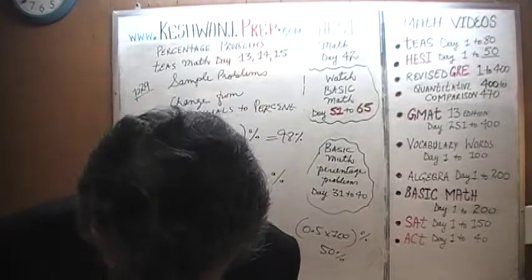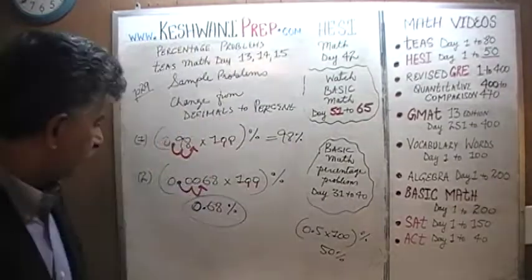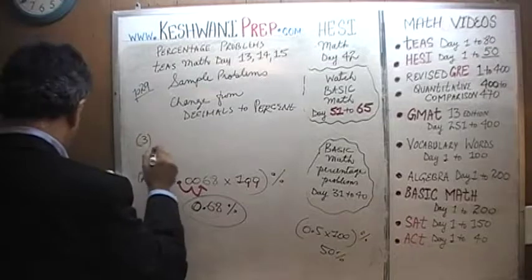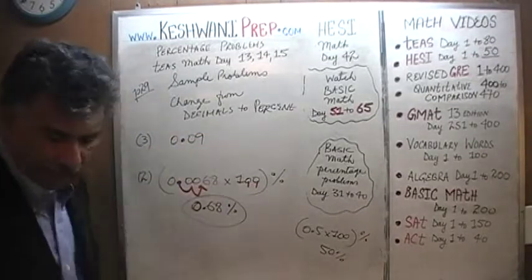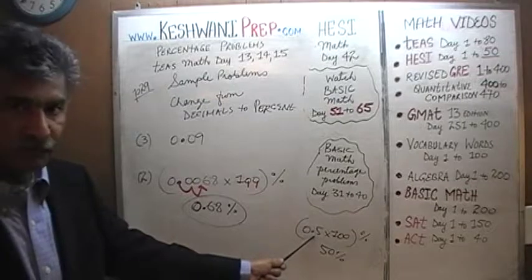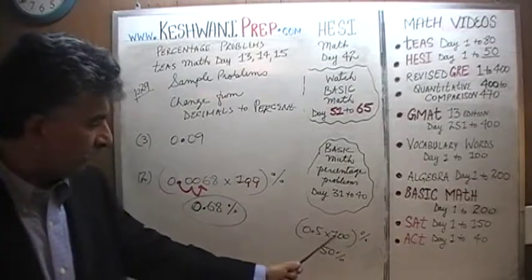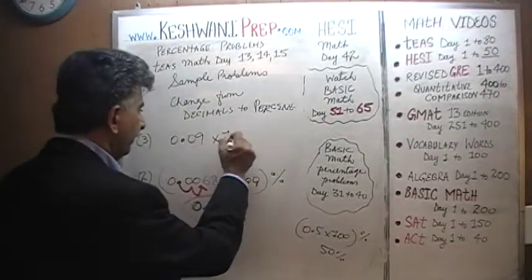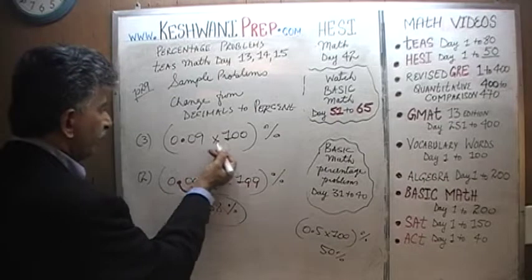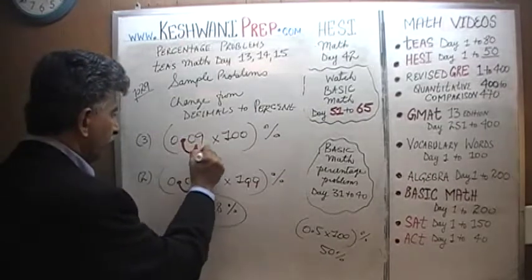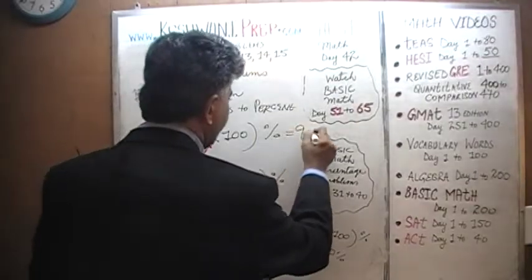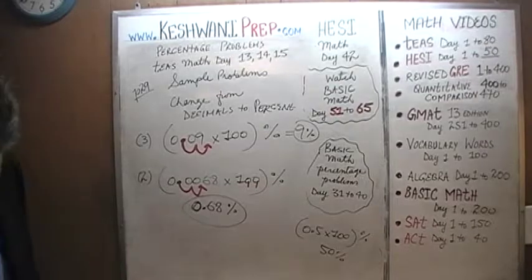Number three: 0.09. We're asked to convert this decimal into a percent. Just like before, multiply by 100. Pick up the decimal point and move it two spots — one, two. The decimal ends up right after the nine, so it becomes 9%.